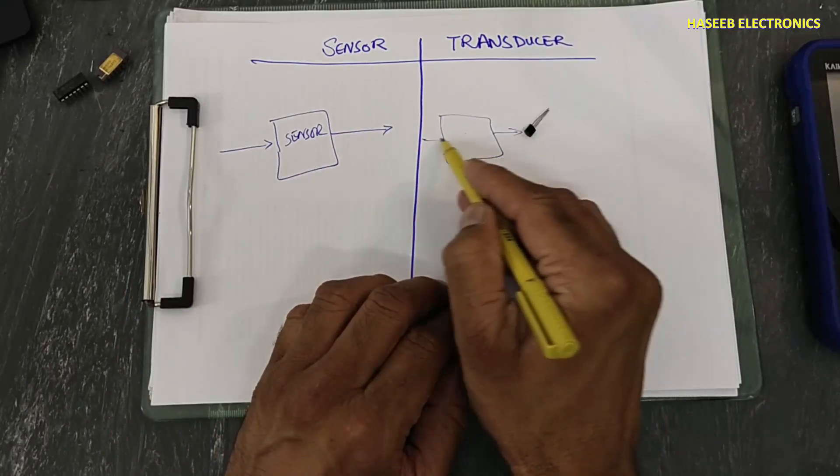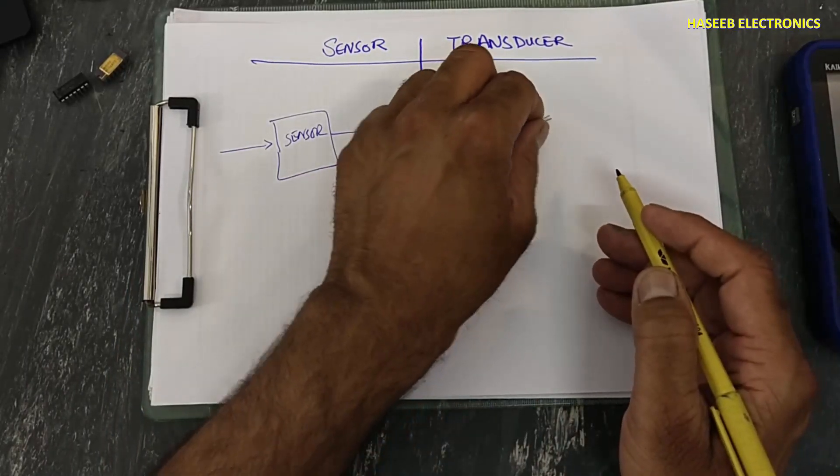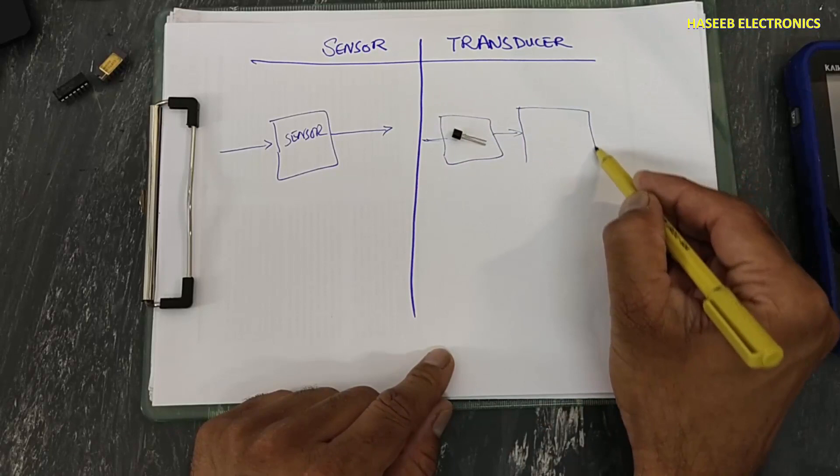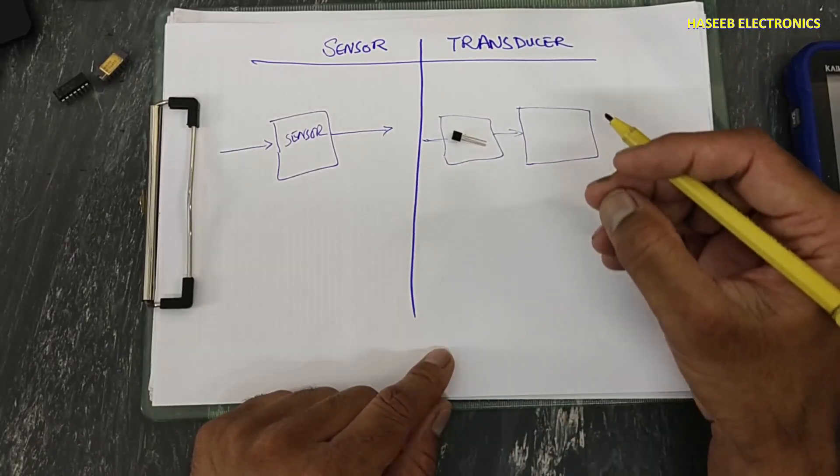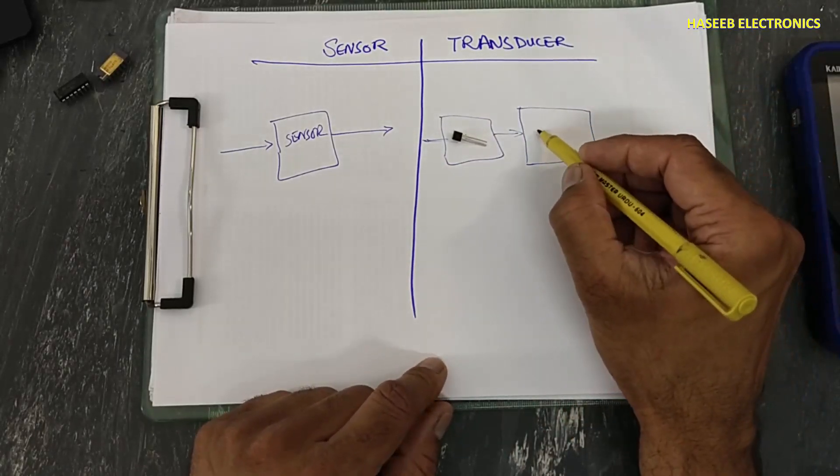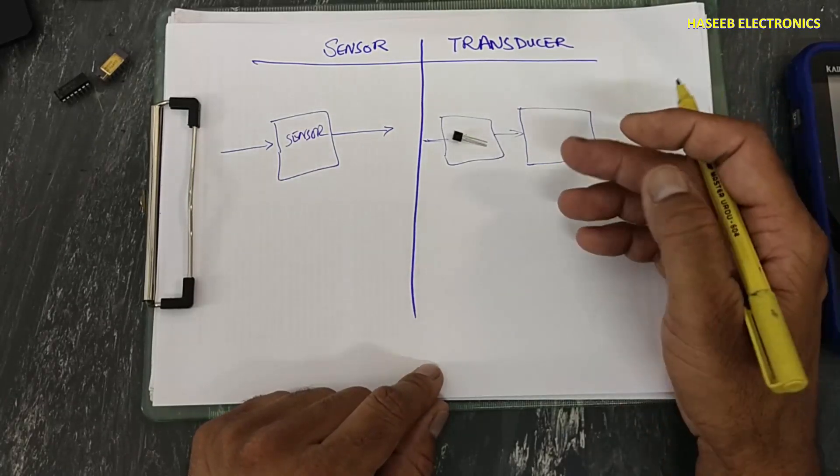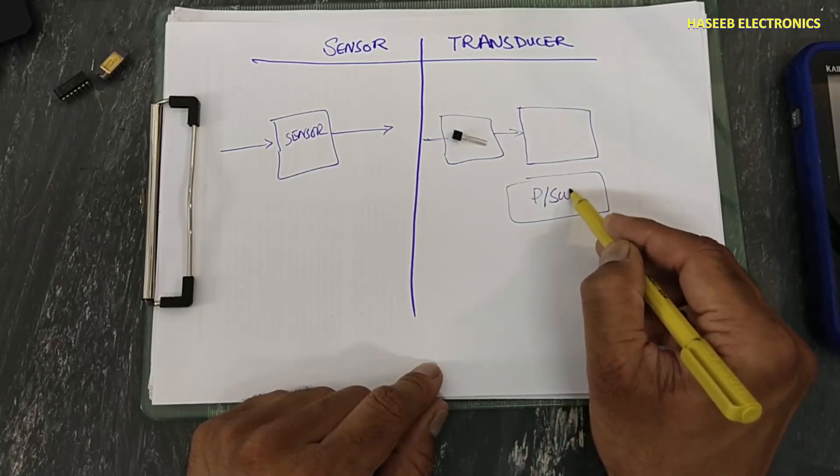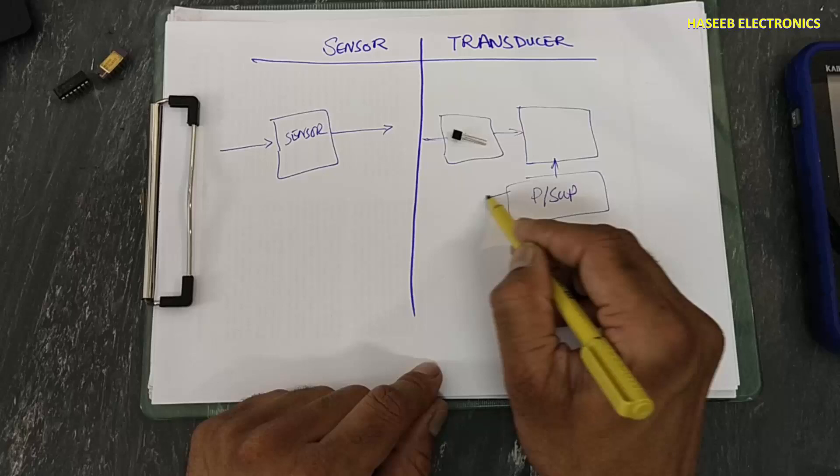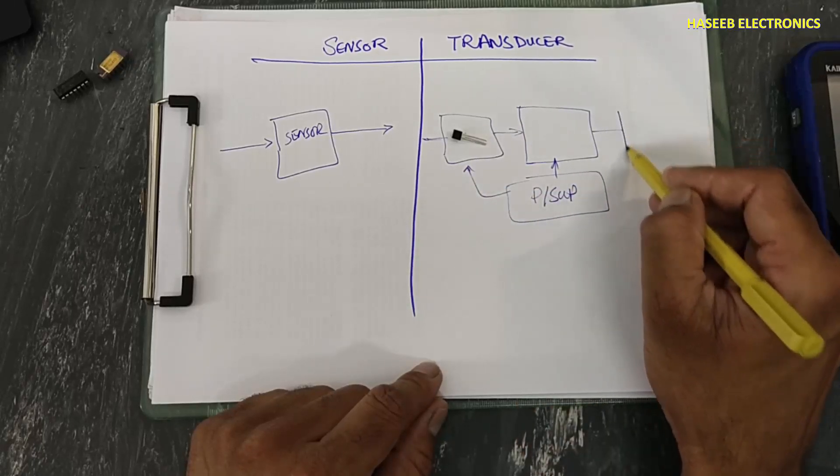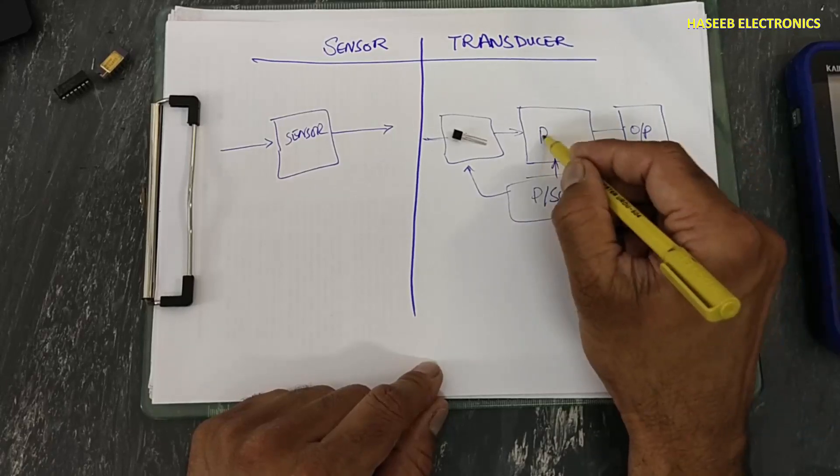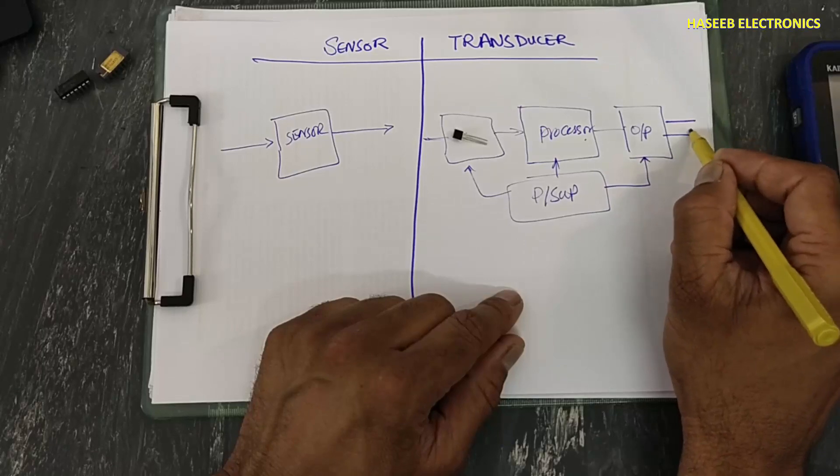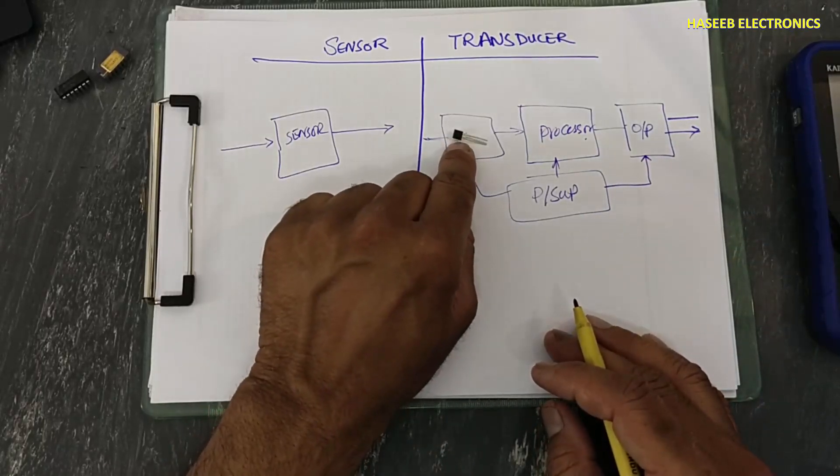Then this signal is processed through any type of processor circuit. It will process, it will make conversions. We have complex electronic circuit, then it needs power, power supply, its own power supply, its own power circuit, then final output circuit. We will receive output.